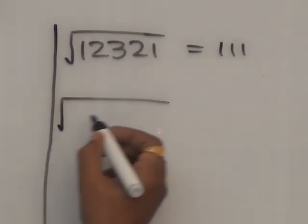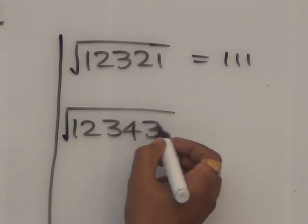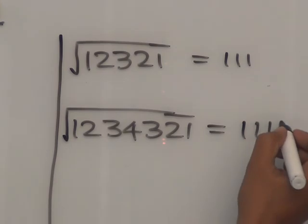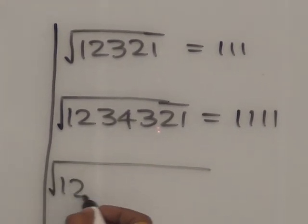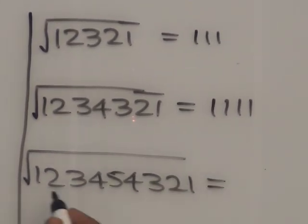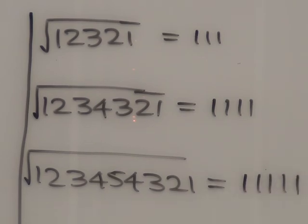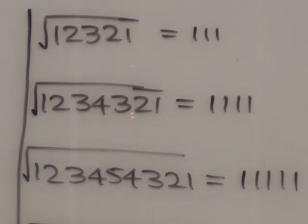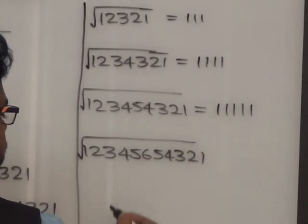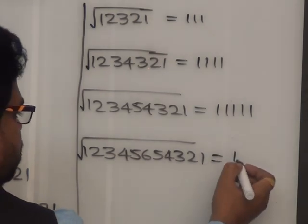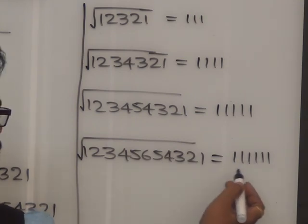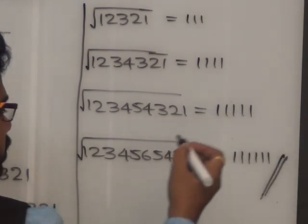Square root of 1, 2, 3, 4, 3, 2, 1 — so 4 ones — answer is 1111. Suppose square root of 1, 2, 3, 4, 5, 4, 3, 2, 1 — hint answer: 5 ones, so answer is 11111. Suppose square root of 1, 2, 3, 4, 5, 6, 5, 4, 3, 2, 1 — so hint answer: 6 ones — answer is 111111. All of you understand Technique 2?